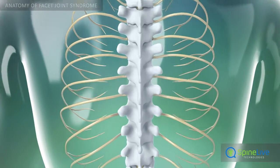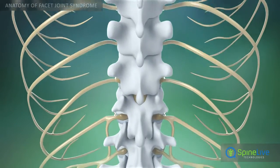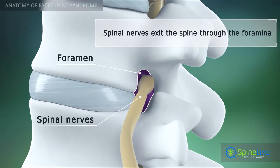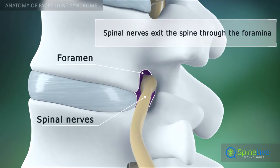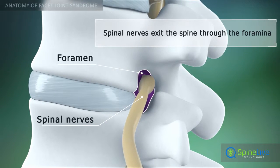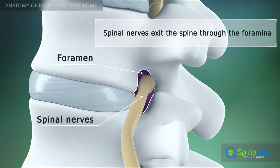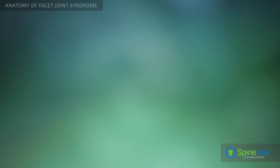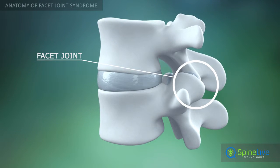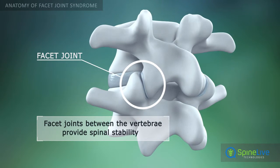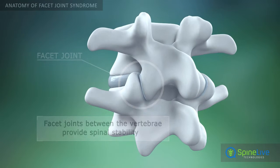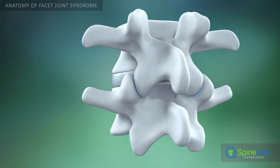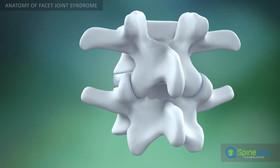The spinal nerves branch off your spinal cord in pairs and travel through small openings between your vertebrae, called intervertebral foramina. Facet joints are located between each pair of vertebrae. They guide and limit the movement of the spinal column, providing stability and bearing a share of the load on the spine.